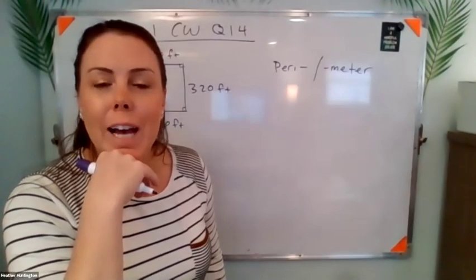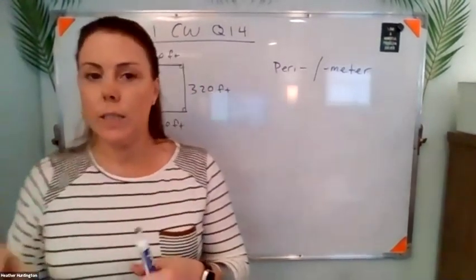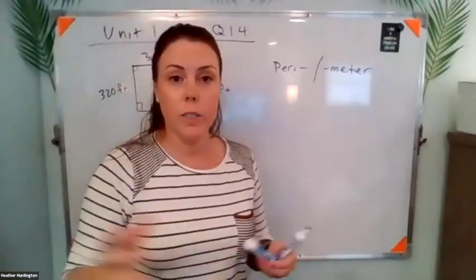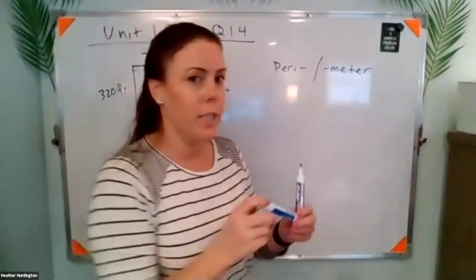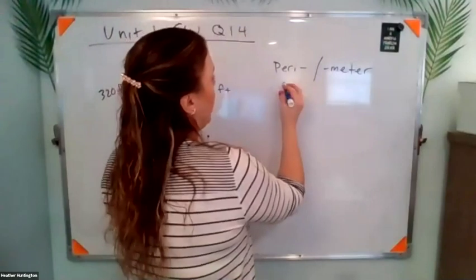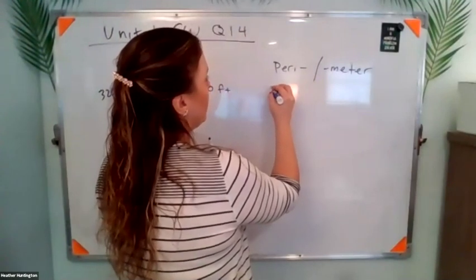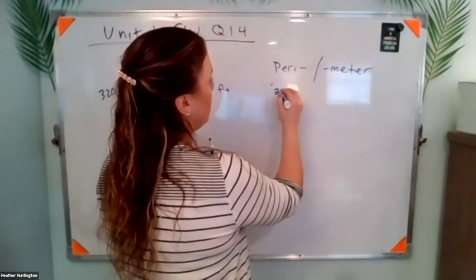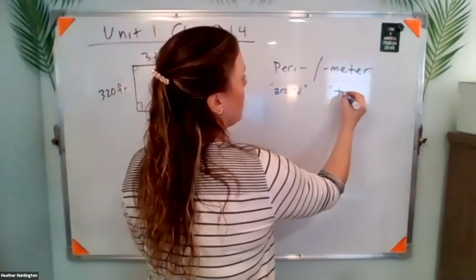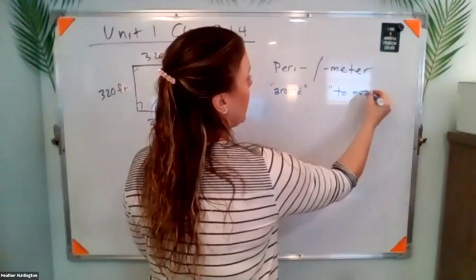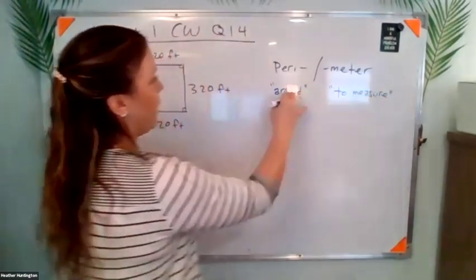It comes from Latin, so we can literally translate it. So this is a math course, but I am going to teach you a foreign language. Math is like a foreign language, but there's a lot of Latin, there's a lot of Greek. So this comes from Latin. Peri means around, and meter means to measure. So when you translate it from Latin, it literally means to measure around.